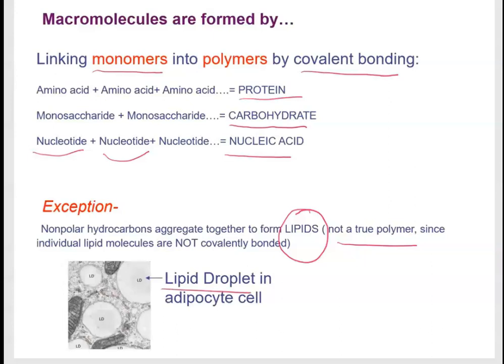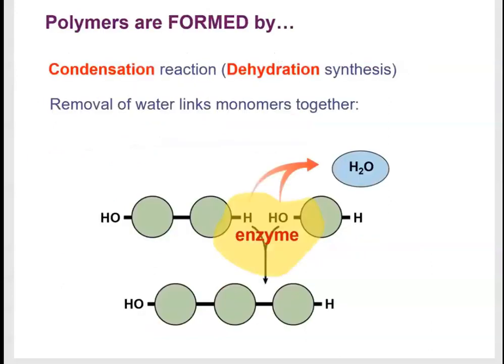Because water molecules are polar and form hydrogen bonds, those interactions are stronger than hydrophobic interactions, so lipids aggregate together and are excluded by water. You can see in an adipose cell these accumulations of little fat droplets. Lipids are made up of smaller units, which will be discussed later.